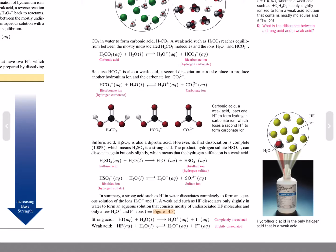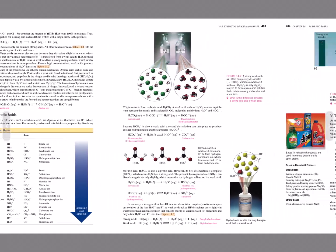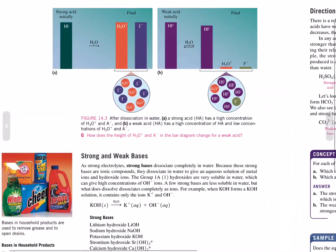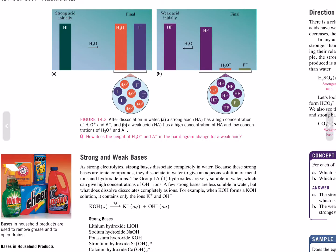In summary, a strong acid such as hydroiodic acid in water dissociates completely to form an aqueous solution of the ions hydronium and iodide. A weak acid such as hydrofluoric acid dissociates only slightly in water to form an aqueous solution that consists mostly of undissociated hydrofluoric acid molecules and only a few hydronium and fluoride ions. Strong acids: HI(aq) plus water yields hydronium plus iodide — it completely dissociates. Weak acids: hydrofluoric acid plus water yields hydronium plus fluoride — only slightly dissociated.